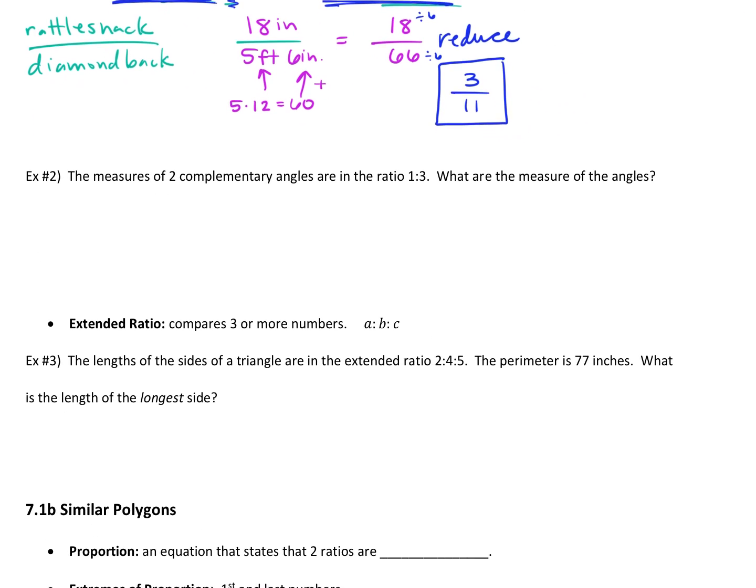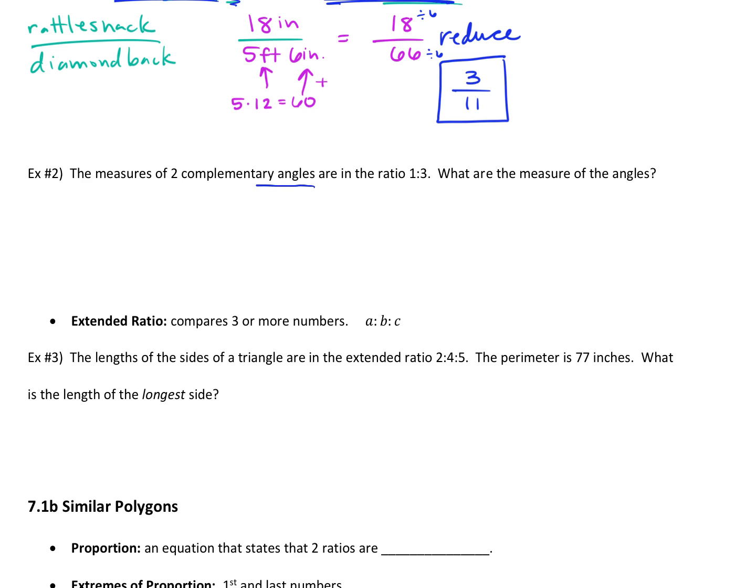Okay, number two. This one says the measure of two complementary angles are in the ratio of 1 to 3. What are the measure of those angles? Anyone know anything about any of those words? What does this mean? Complementary. Not congruent. Not equal. You're thinking congruent. They equal 90. They have a sum of 90.